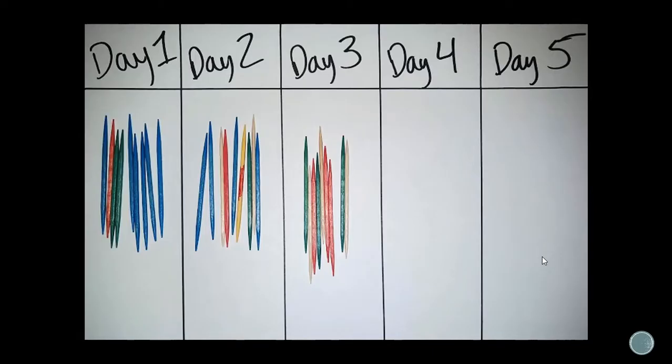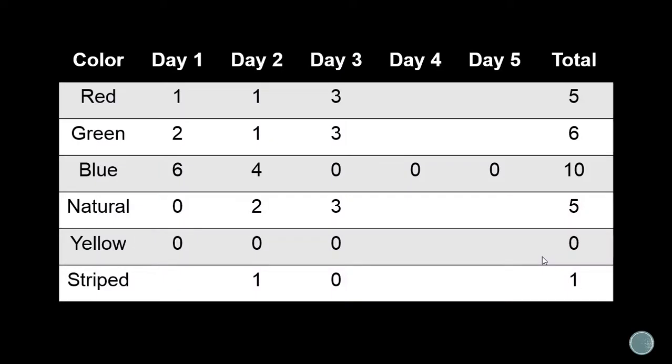On day three, we found these toothpicks: three red ones, three green ones, and three natural colored ones. One of the things I want you to notice about the data we collected this time is that after the blue ones went extinct, there is an increase pretty much evenly amongst the red, green, and natural ones.